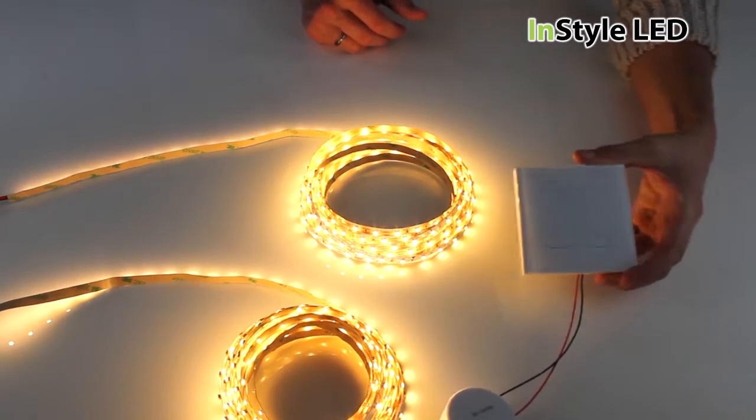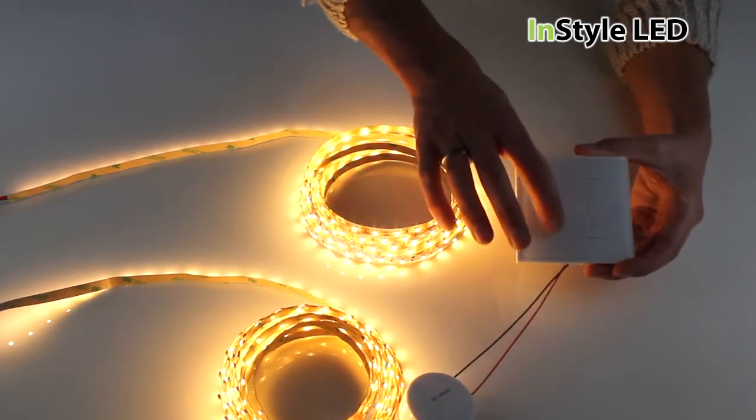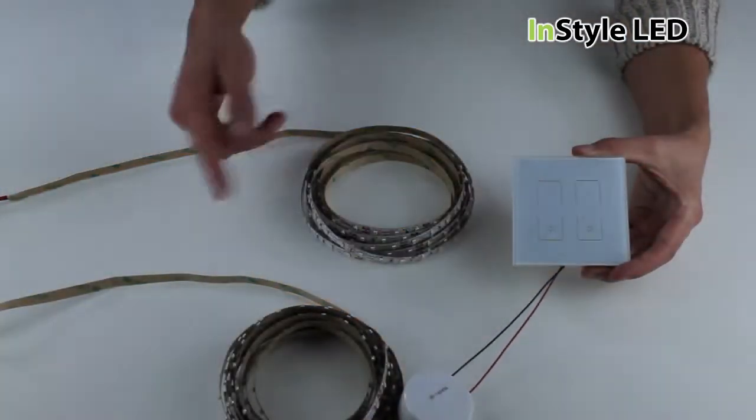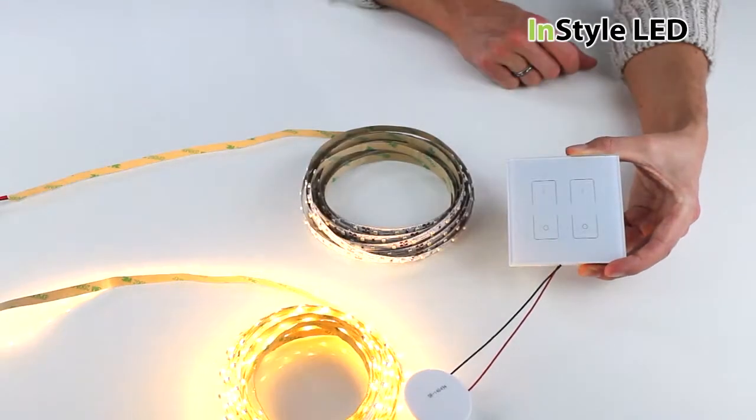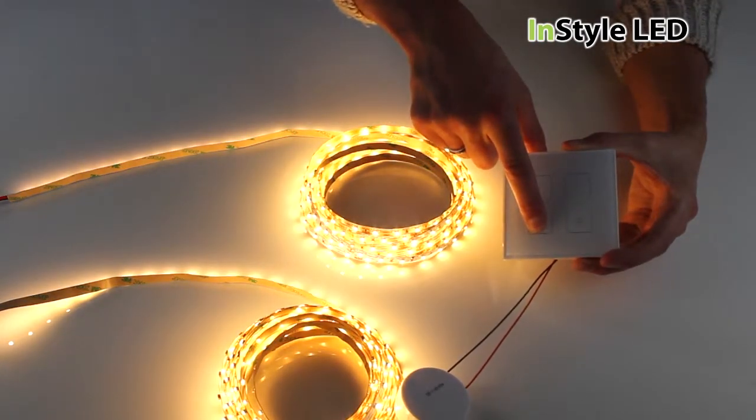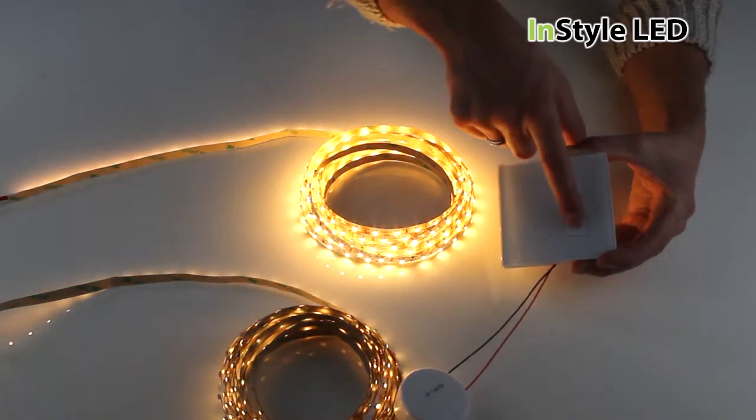This is the two channel wireless wall dimmer by InStyle LED. It is a wall dimmer that can connect to numerous receivers via RF signal to fully dim LED tape from 0 to 100%. This is a two channel wall dimmer meaning you can dim two zones or areas independently.